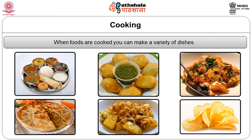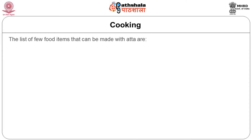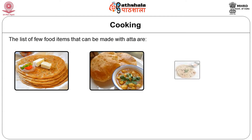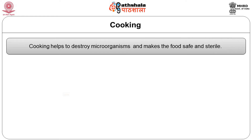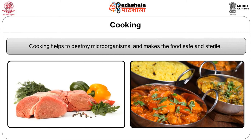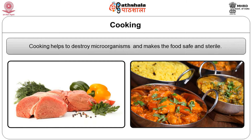You must have eaten potatoes cooked in different ways such as pakora, potato chat, potato parantha, potato vegetables and potato crispies. Can you list a few food items that can be made with aata? Yes — paratha, puri, chapati, bread, naan etc. So you see that you can make a variety of dishes with the same food. Cooking helps to destroy microorganisms and makes the food safe and sterile. Raw foods get spoiled because of the harmful microorganisms present in them, which get destroyed when you cook food.